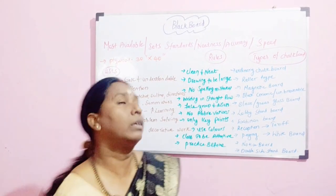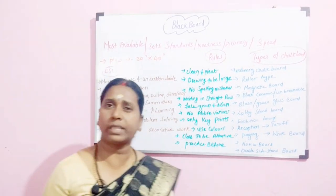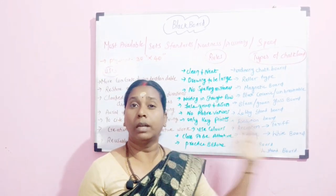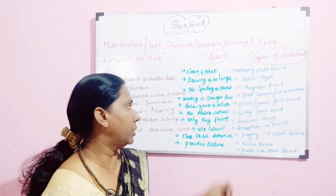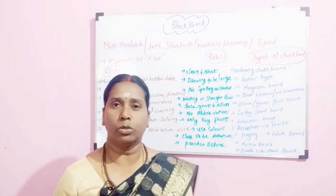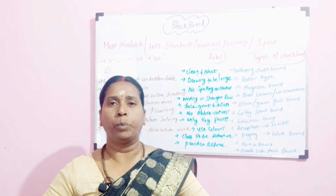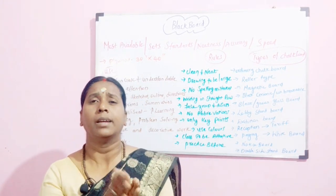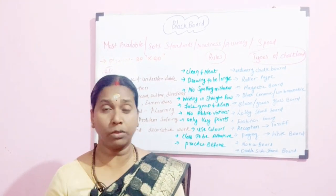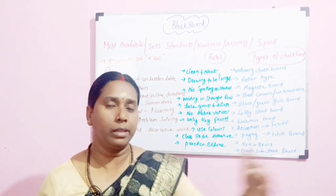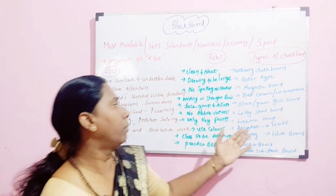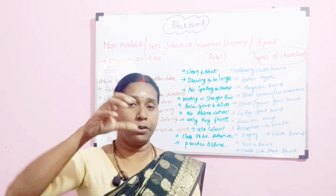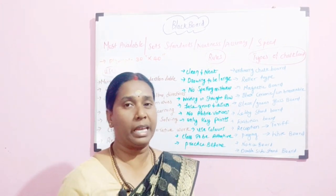And then we have black or green glass boards. You would have seen in school — you will have either a green or a black glass board, and you can use those boards also for teaching. Then lobby stand boards — you will have a three-pillar stand that you can use in the lobby. You would have seen it in front of colleges during inspection, and they also keep it in front of restaurants, hotels, and all those areas. In the lobby session they used to keep it — that is your lobby stand board.